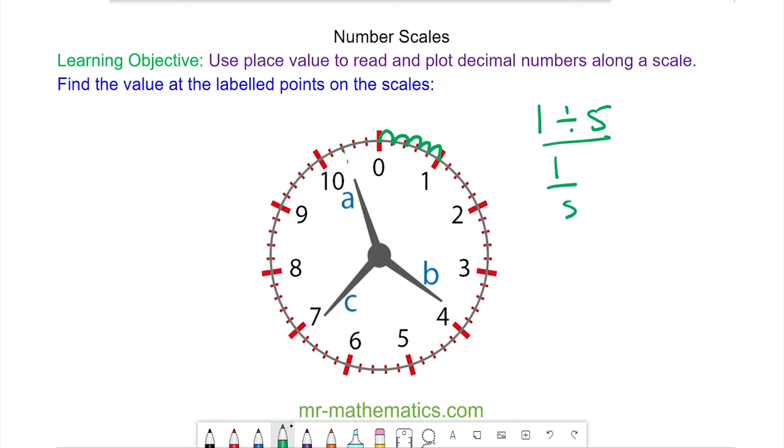So each of these is worth 0.2, so we have 0.2, 0.4, 0.6, 0.8, and 1. To work out the value of a we have 10, 10.2, and 10.4.